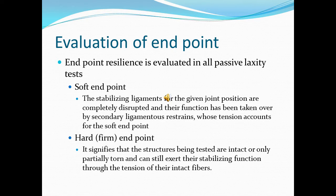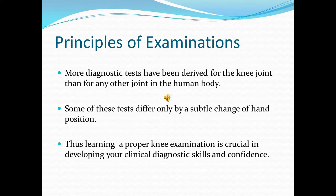Some words on evaluation of end points. End point resilience is evaluated in all passive laxity tests. Soft end points are experienced when the stabilizing ligaments are completely disrupted and their function has been taken over by secondary ligamentous restraint. Hard or firm end points are felt when the structures being tested are intact or only partially torn and can still exert their stabilizing functions. More diagnostic tests have been derived for the knee joint than for any other joint in the human body, and learning a proper knee examination is crucial in developing one's clinical diagnostic skills and confidence.